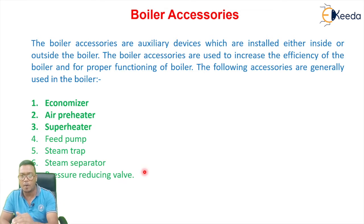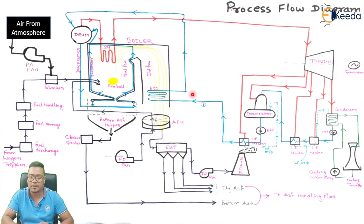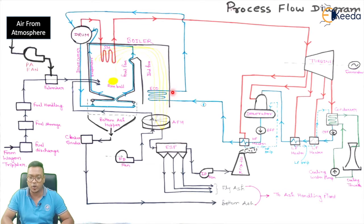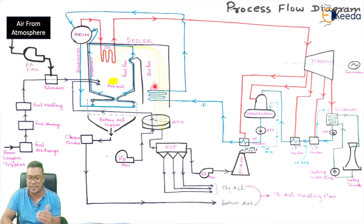Let's start from the economizer. This is the process flow diagram, which I have already explained in my previous lectures. The feed water is coming to the economizer, then from the economizer it is going into the drum. The economizer is placed in the second pass of a boiler. We will study why it is placed there and what the advantages are.